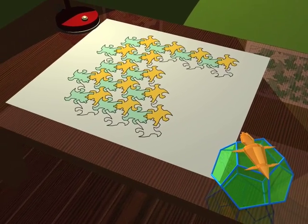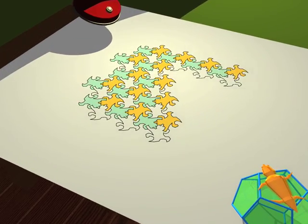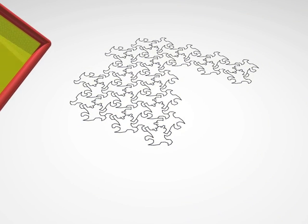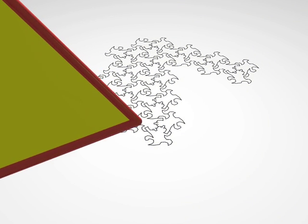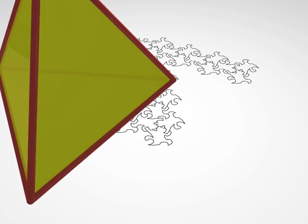As a first attempt, he could try to pass some three-dimensional objects through his flat world. Here, for example, is a tetrahedron with its four faces passing through the lizard's plane.